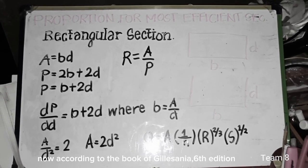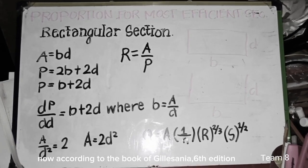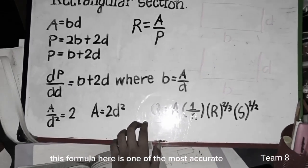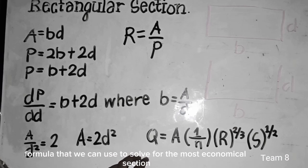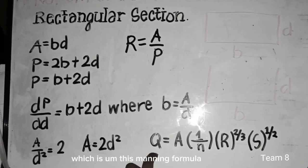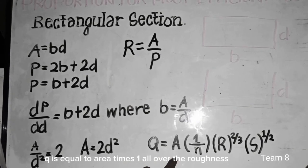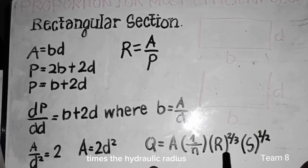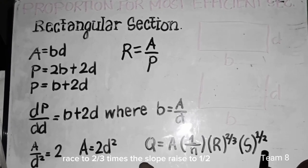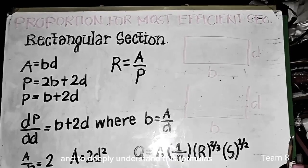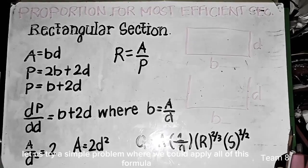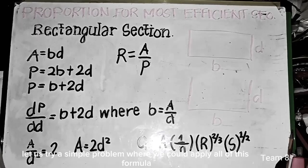Now, according to the book of Gillesania, 6th edition, this formula here is one of the most accurate formulas that we can use to solve the most economical section, which is this Manning formula. Where Q is equal to area times 1 all over the roughness times the hydraulic radius raised to 2/3 times the slope raised to 1/2. And to deeply understand these formulas, let us try a sample problem where we could apply all of these formulas.